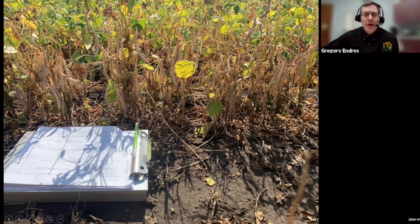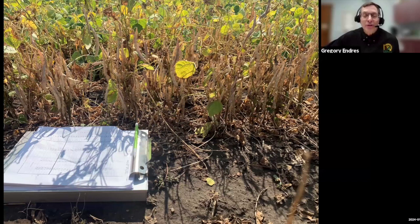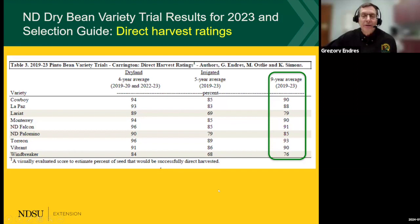In addition to the guide this year, we have a summary of direct harvest ratings on pinto varieties. We do this visually in the field at Carrington, both in dryland and irrigated trials, and ultimately we have scoring to indicate the success rate for bringing the beans home with direct harvest. Here's a look at the chart that was new this year — it's established pinto bean varieties, a combination of ratings over four or five years under dryland and irrigated environments, and then the nine-year average. We hope this will be useful if you're considering direct harvest, which is becoming more and more common.